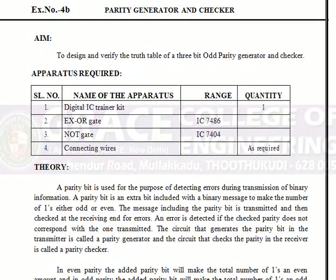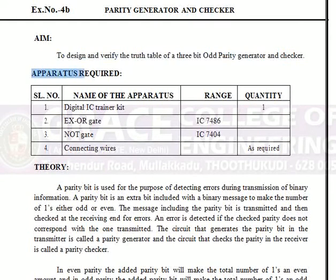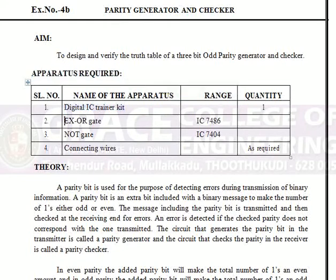Aim: To design and verify the truth table of the 3-bit Odd Parity Generator and Checker. Apparatus required: Digital IC Trainer Kit — 1, EXOR Gate — 1, NOR Gate — 1, and connecting wires.